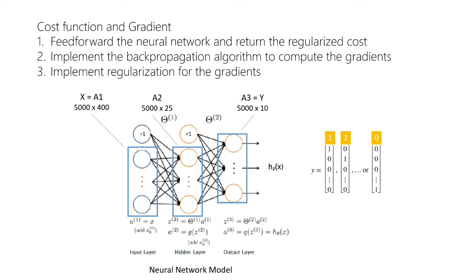Our neural network has three layers: an input layer, hidden layer, and output layer. We will implement the cost function and the gradient for the neural network with three steps: forward propagation to get the regularized cost, back propagation to compute the gradient, and regularize the gradient.